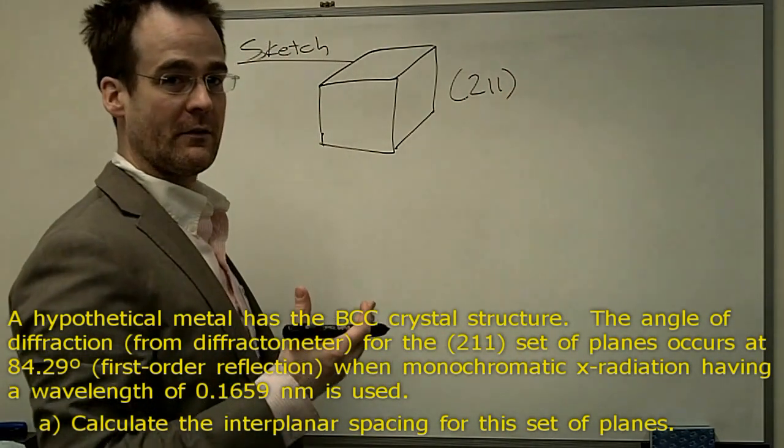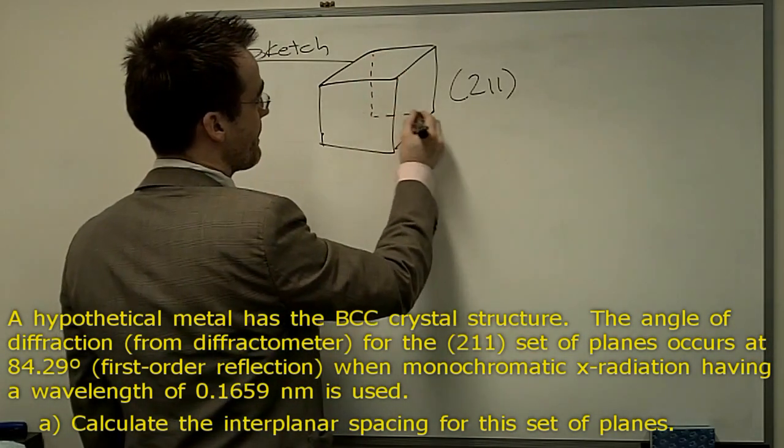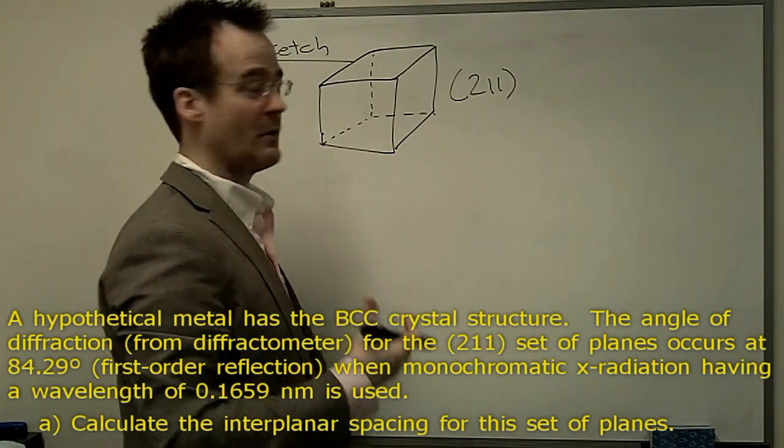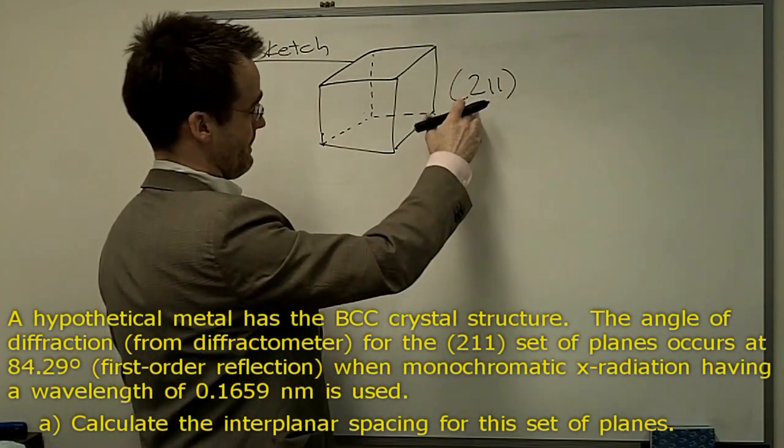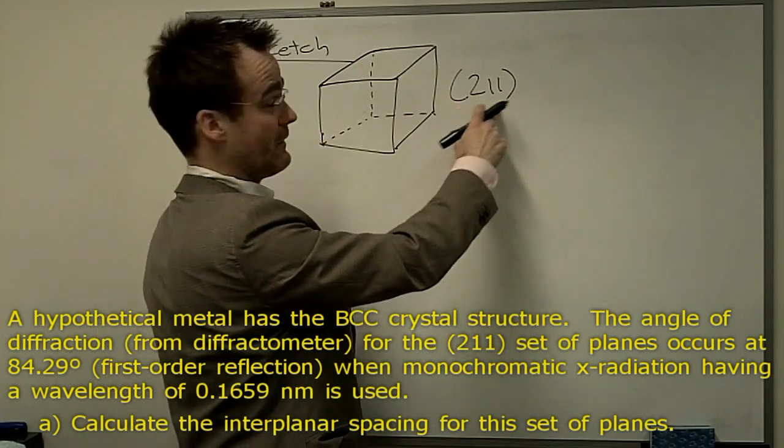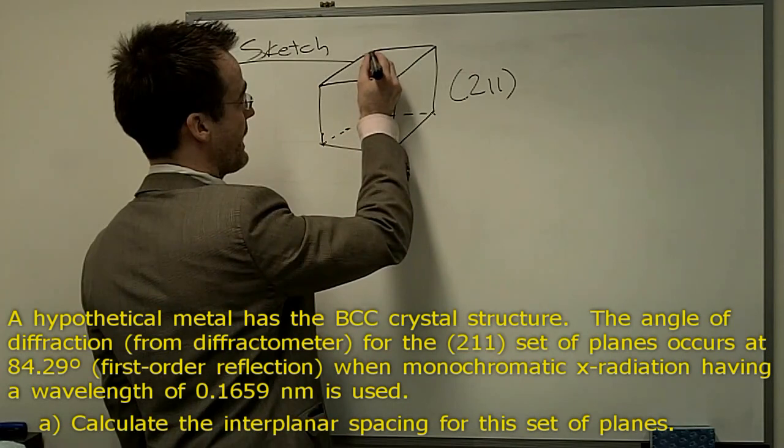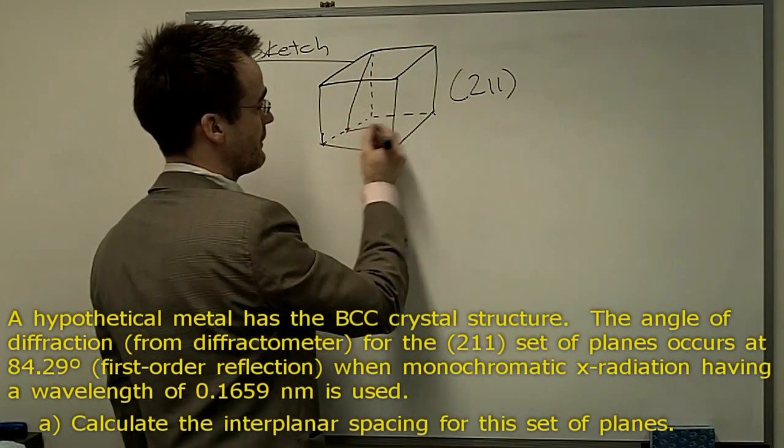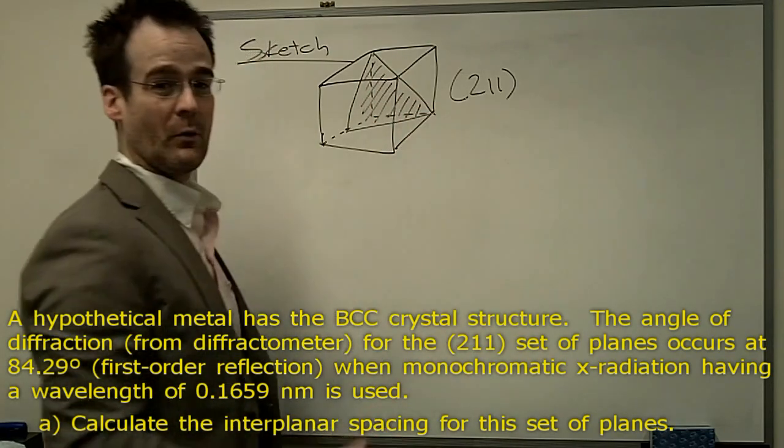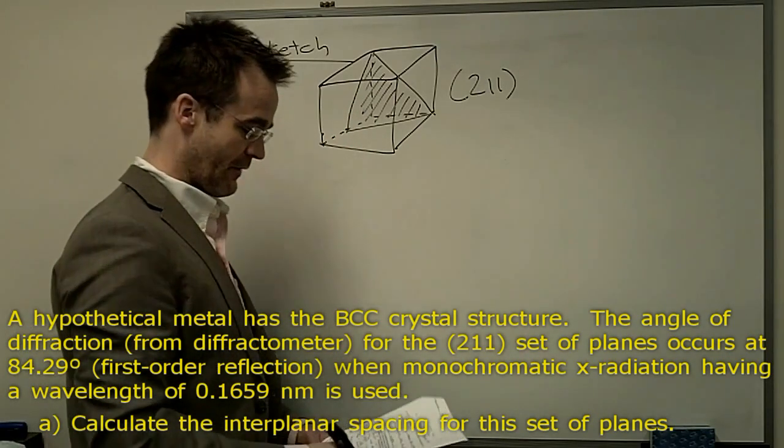So the question tells us that the diffraction has occurred for the (211) set of planes. So just for a quick review of the concepts of Miller indices, let's draw that plane in. The reciprocals that created these indices are going to be 1/2, 1, and 1. So we've got an intercept here, 1/2. And that's a (211) plane. So there's going to be parallel sets of (211) planes that the diffraction is occurring for.